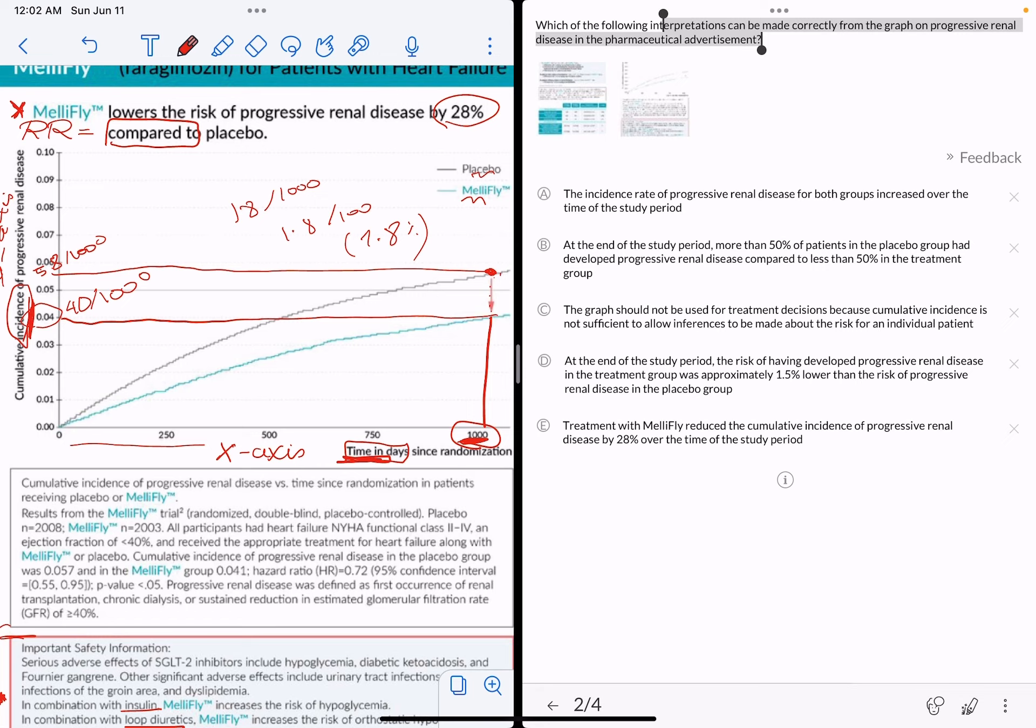B says at the end of the study period, more than 50% of patients in the placebo group had developed progressive renal disease compared to less than 50% in the treatment group. In fact, this is incorrect because this study shows us 58 out of 1000, which is 5.8%, not 50% at all. So this is completely wrong.